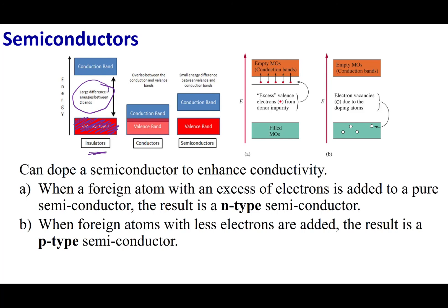In a conductor, the conduction band and the valence band overlap in energy. The conduction band is filled with empty molecular orbitals, and since the valence band has all these electrons, electrons in the valence band can move into these empty orbitals in the conduction band. Because the conduction band is empty, those electrons are mobile — they can jump from one atom to another through the conduction band. This is why conductors can conduct electricity.